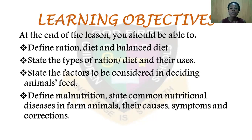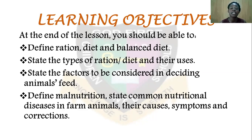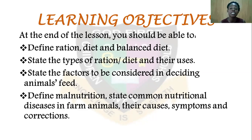Let's look at our learning objectives. At the end of the class, you should be able to: define ration, diet, and balanced diet; state the types of ration or diet and their uses; state the factors to be considered in determining animal food; define malnutrition; and name common nutritional deficiencies in farm animals — their causes, symptoms, and correction.